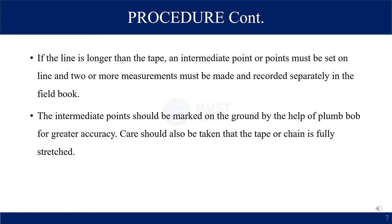If the tape length is shorter than the side or object length, we introduce intermediate points so that we can easily measure the distance. One important thing is that the intermediate points should be marked on the ground with the help of a plumb bob for greater accuracy. Care should be taken that the tape or chain is fully stretched. You can pull the tape properly and use intermediate points, dropping the plumb bob to mark exact vertical points on the ground.